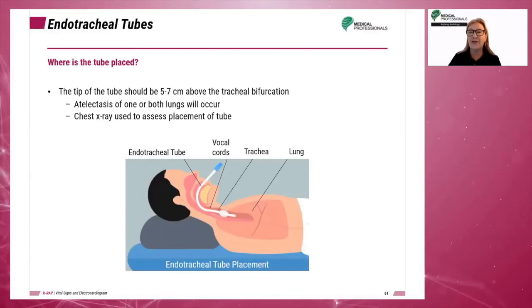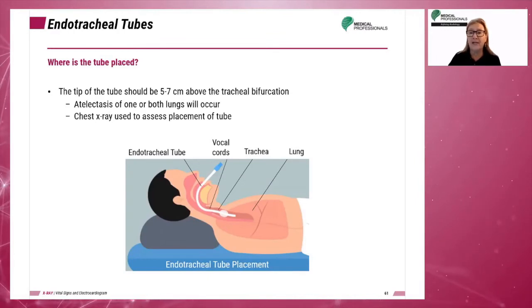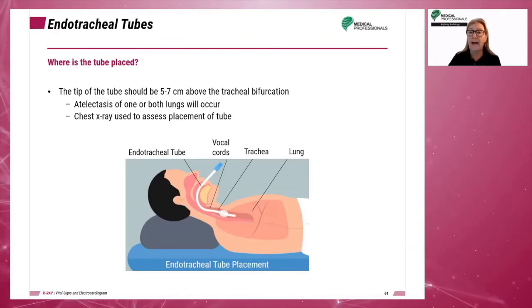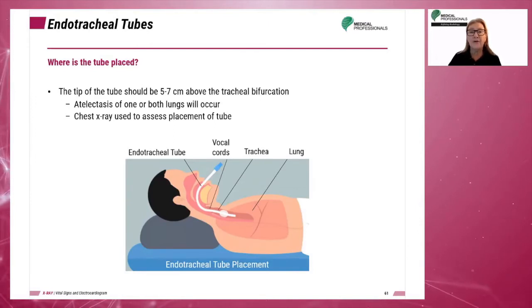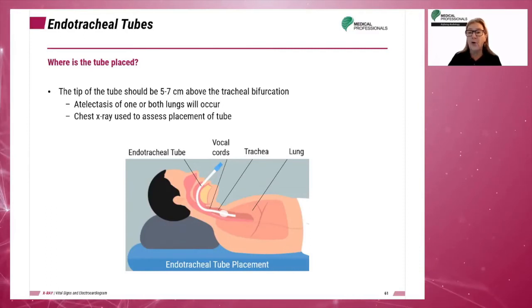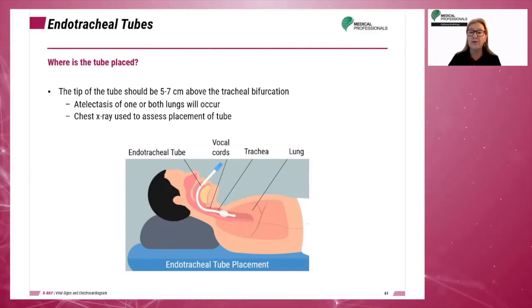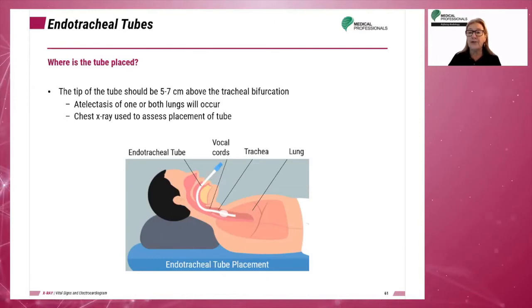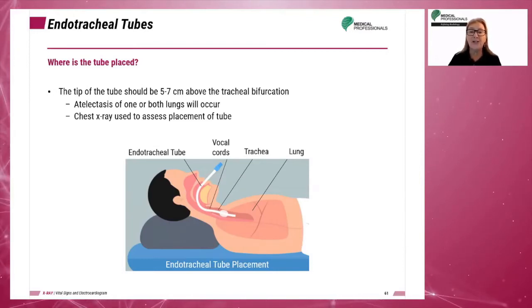The tip of the endotracheal tube should be 5 to 7 centimeters above the tracheal bifurcation. If the tube is extended further, it can result in lung collapse. Atelectasis is the condition where the lungs will collapse — if there is no gas exchange in one or both lungs, part or the whole of the lungs will collapse due to failure of expansion or reabsorption of gas from the alveoli. It is therefore important to check the placement of the endotracheal tube. The most common method of assessment is a chest x-ray.